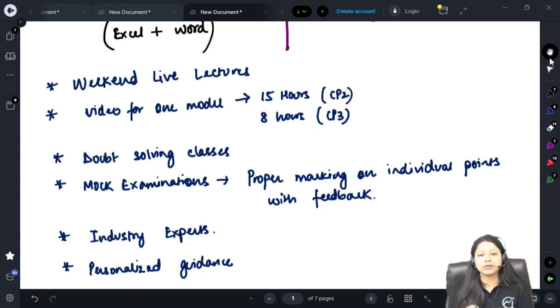Again there will be few video lectures which will be provided to you once you enroll for the course. For CP2 approximately 15 to 17 hours of video lectures are there which covers entire paper 1 and paper 2 model. It's a complete model build up from the scratch along with audit trail and summary. Again for CP3, 7 to 8 hours of video lectures wherein we cover one particular scenario, how to draft the communication and the reflective questions.